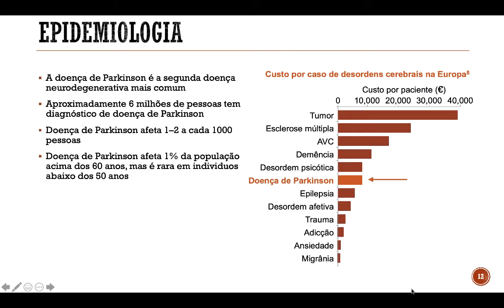A doença de Parkinson é a segunda doença neurodegenerativa mais comum, perdendo apenas para a doença de Alzheimer. Atualmente, aproximadamente 6 milhões de pessoas têm a doença de Parkinson — 1 a 2 pessoas a cada mil. A proporção é muito maior na população mais idosa: na população acima de 60 anos, essa proporção pode chegar a 1%. Nas pessoas abaixo de 50 anos, apesar de existirem casos, ela é mais rara.